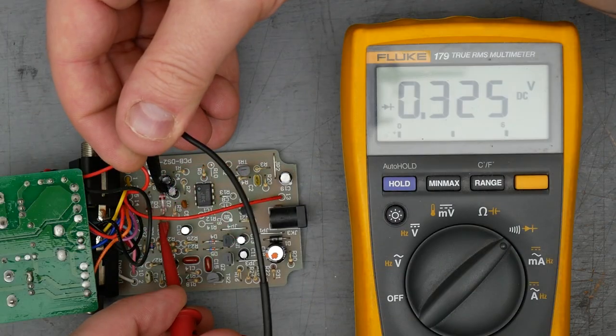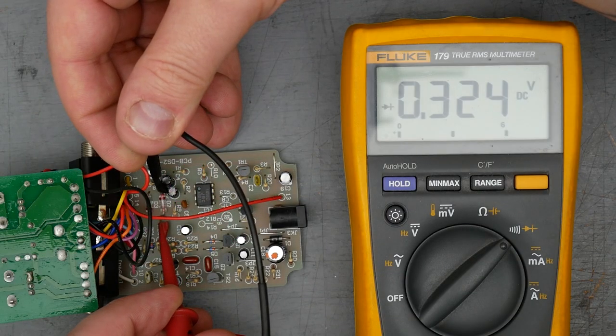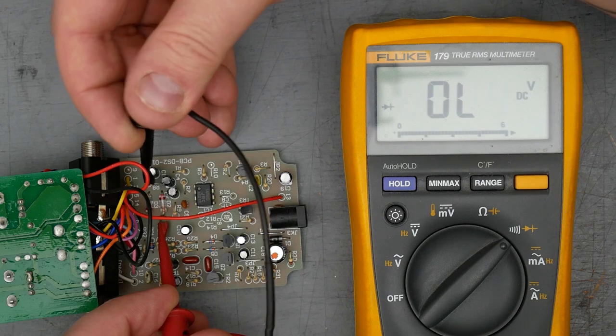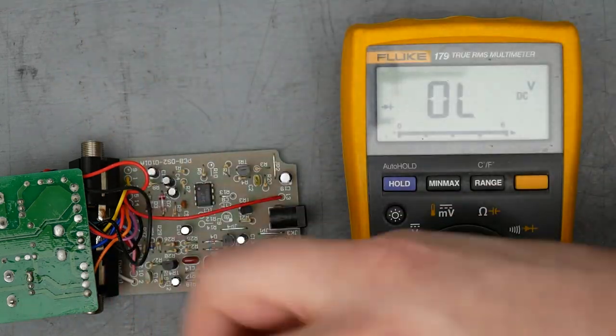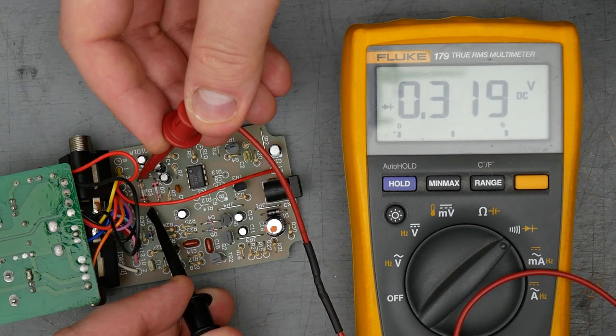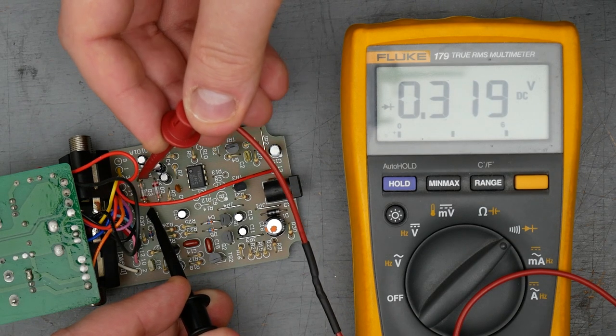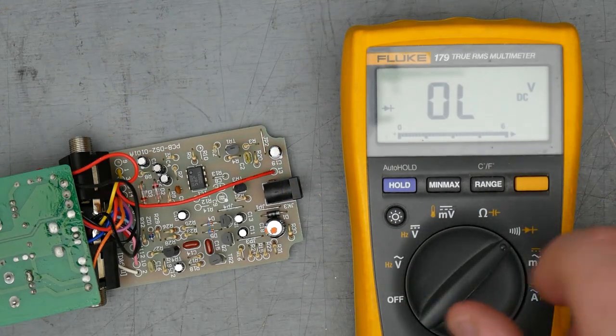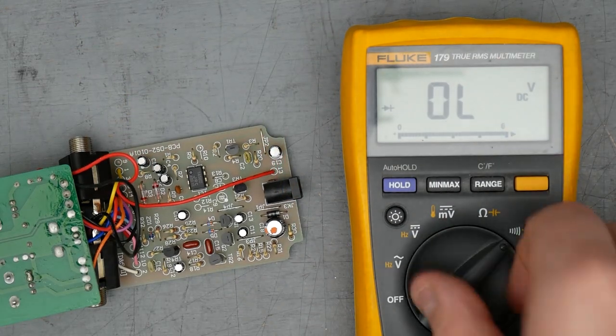Alright, so there's the top diode, 0.325 or so, so almost definitely germanium. Second diode here, lower diode, is 0.319, so pretty close. Almost definitely germanium, and just from the looks of it, they're definitely germanium.